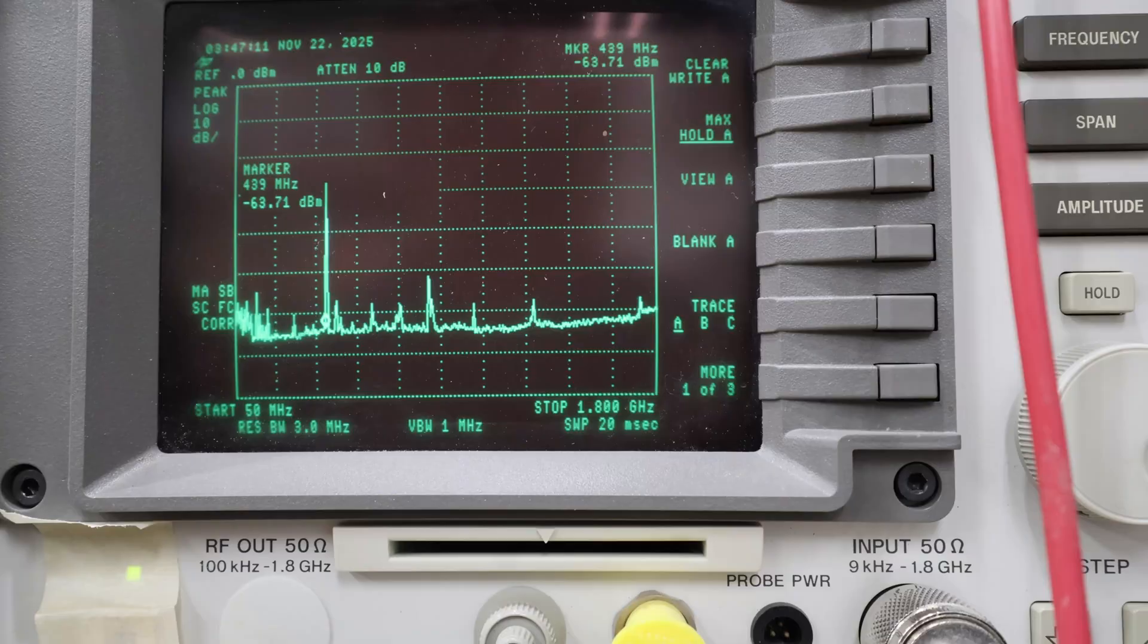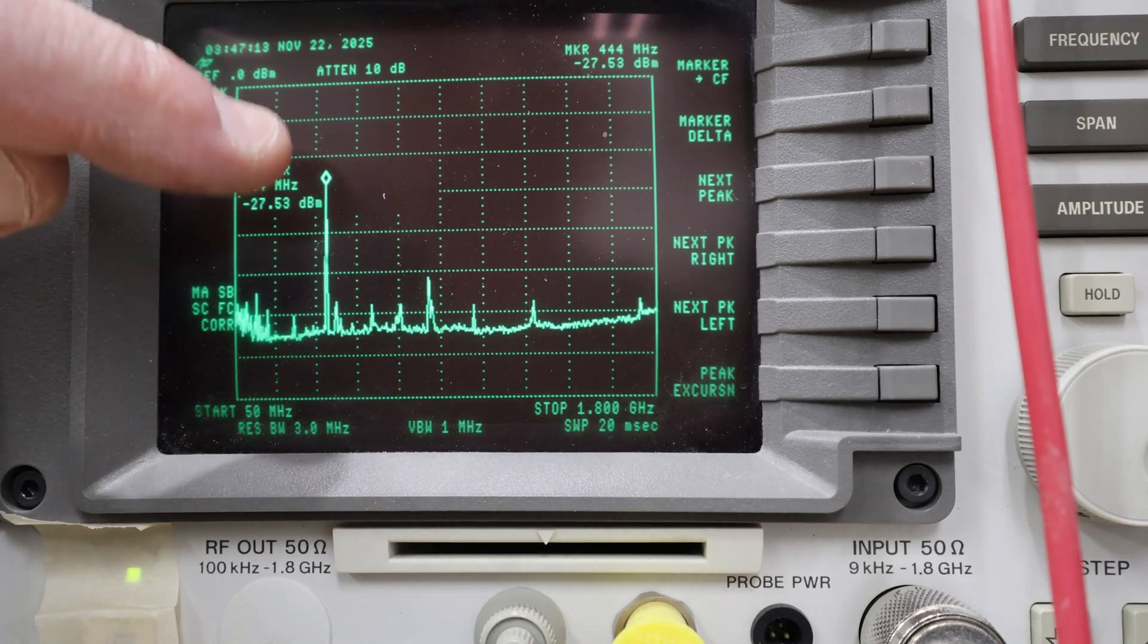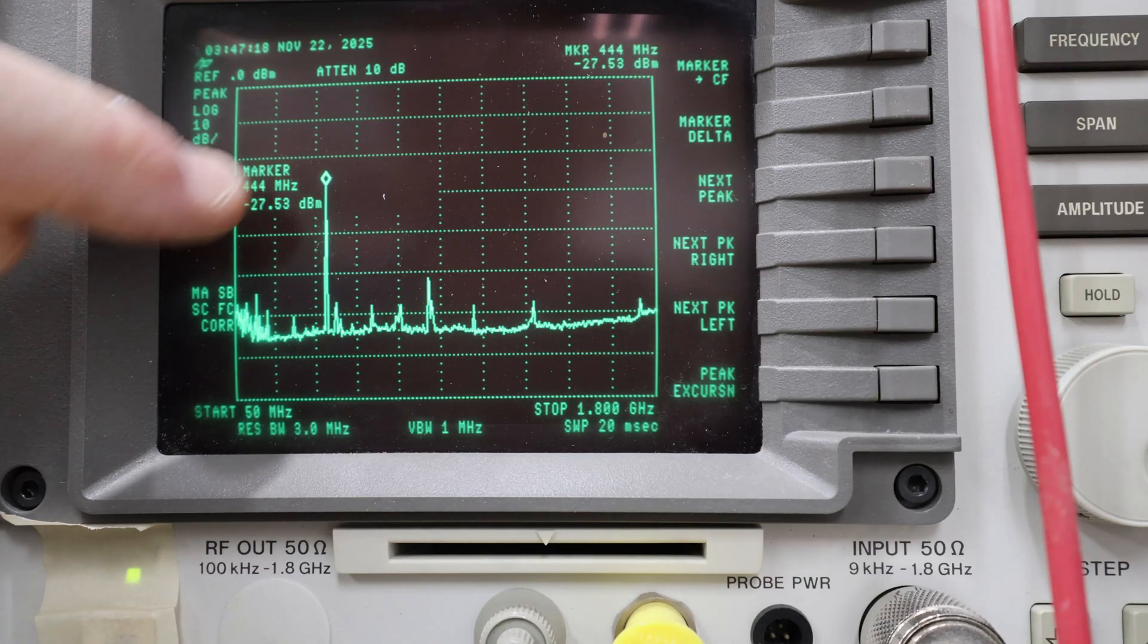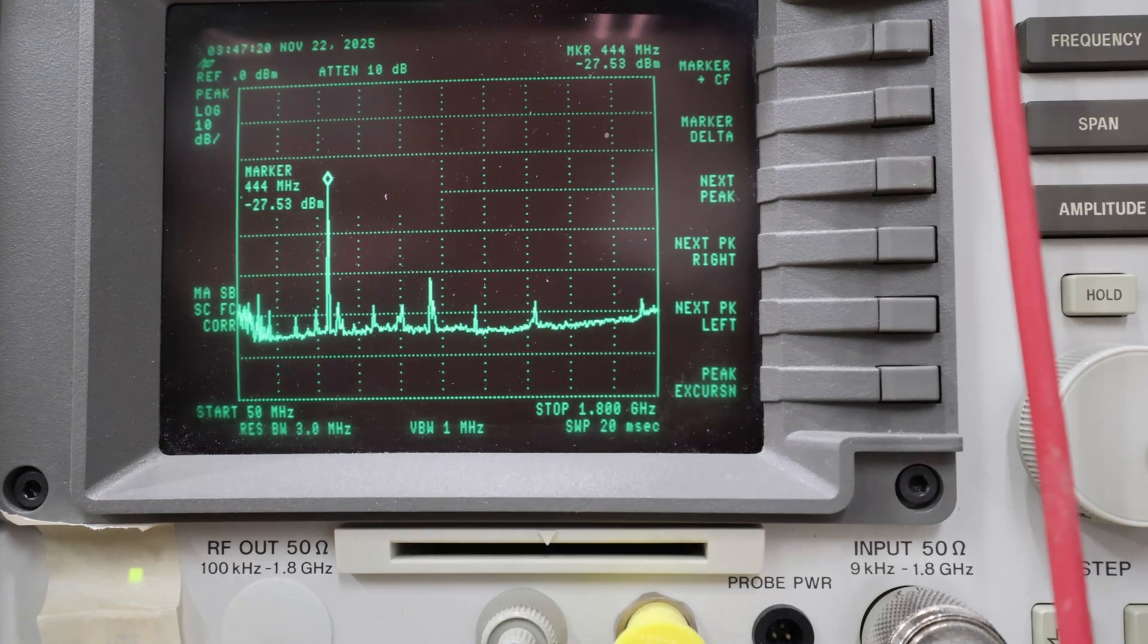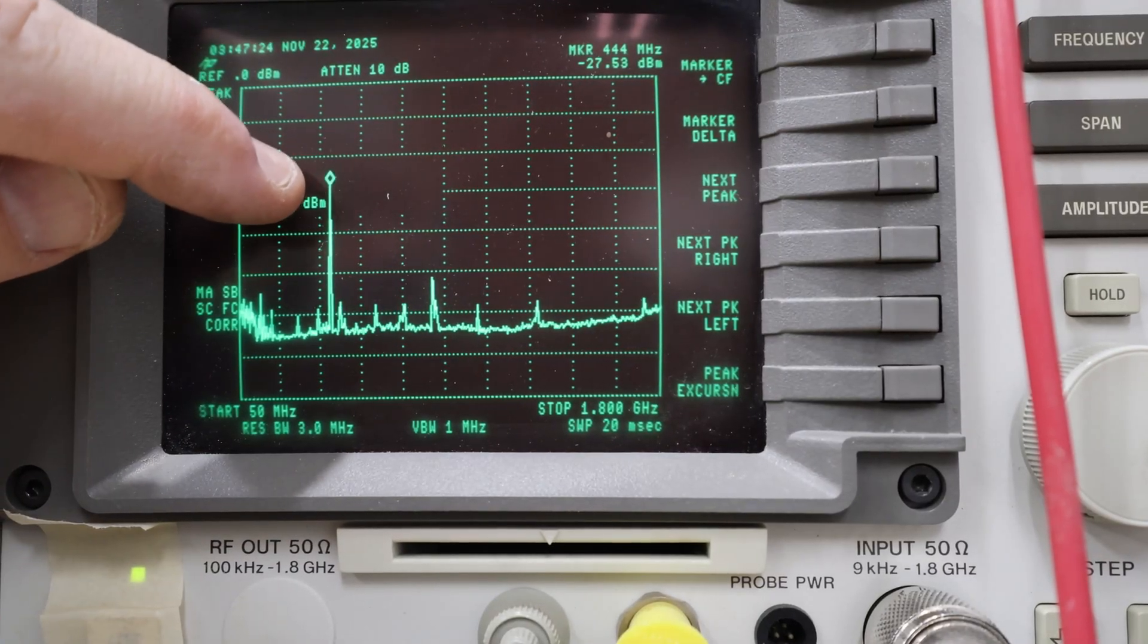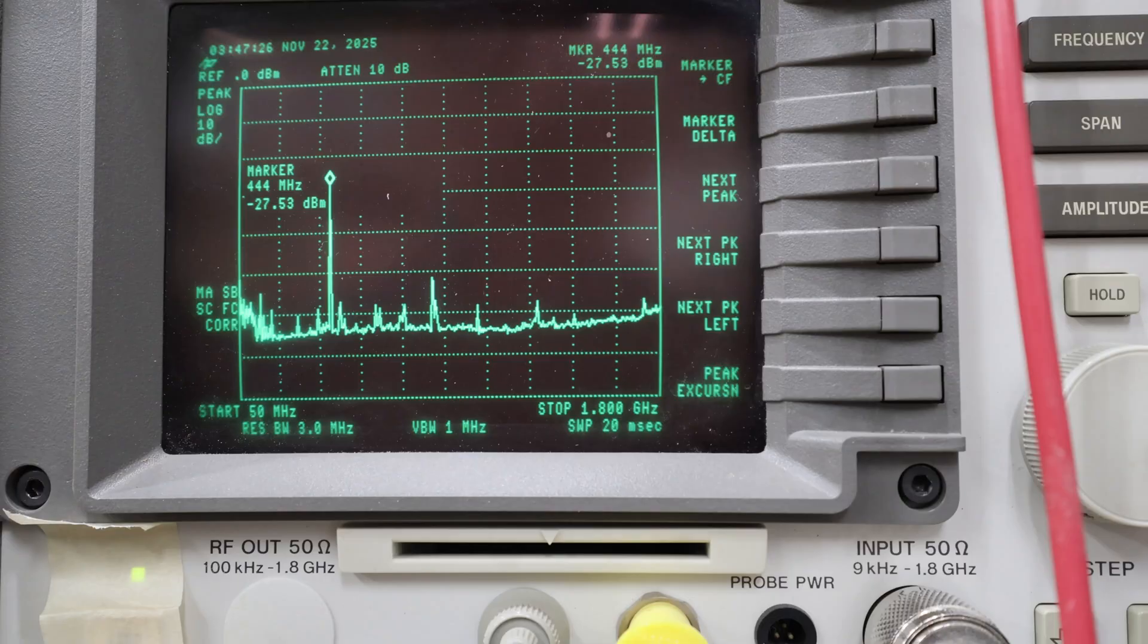So there's a peak there. Let's go to peak search. 444 megahertz. Yes, that's a pretty common entry ISM band here they call it. And likely that that is where the frequency of interest is. Let's zoom into that 444 and see if we can see a bit more.